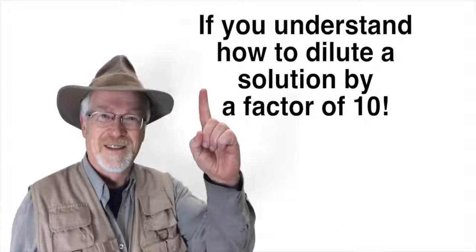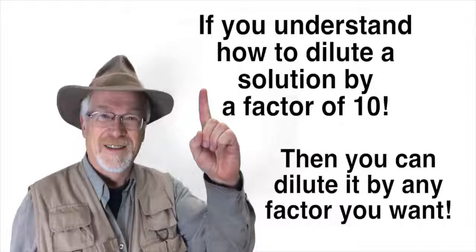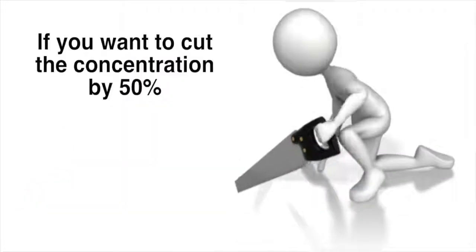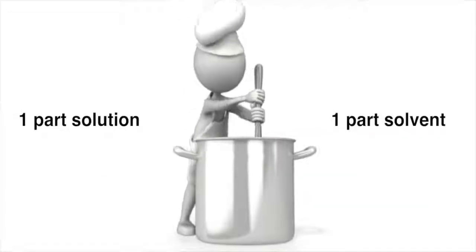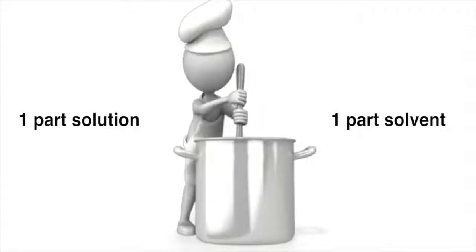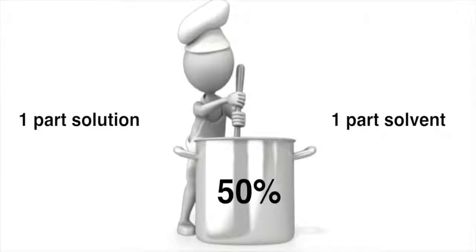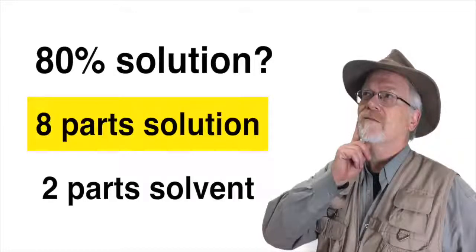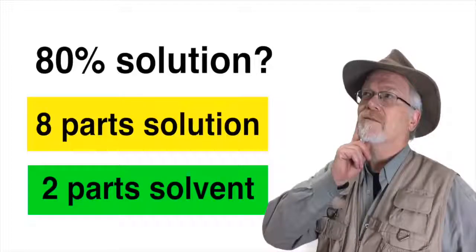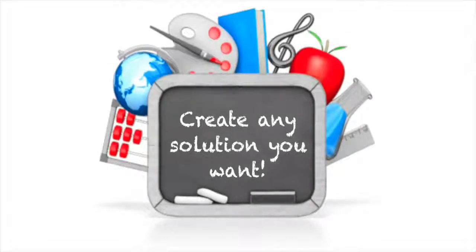Okay, so now if you understand how to dilute a solution by a factor of 10, then you can dilute it by any factor you want. If you want to cut the concentration by 50%, add one part solution to one part solvent. Then you have two parts, one of which is your solution, and so you've diluted it by one part in two. One divided by two is 0.5 or 50%. See how that works? If you only want to knock down the concentration by 20%, that is if you want to create an 80% solution, you add eight parts of the solution to two parts of solvent, so that you have eight parts in a total of 10 parts, and so on. You can use this procedure to create any fraction you want.